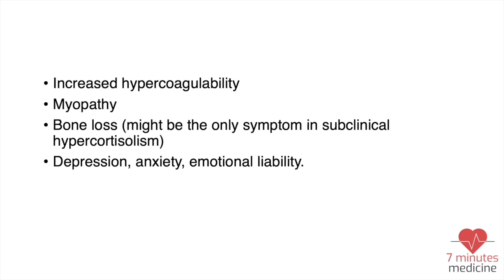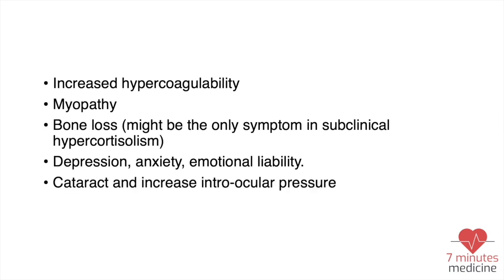They can also present with increased hypercoagulability, myopathy, and bone loss, because osteoporosis is a common finding in Cushing syndrome — it might be the only symptom in subclinical Cushing syndrome. Additionally, depression, anxiety, emotional lability — which is often underestimated — cataract, increased intraocular pressure, and increased risk of infection.